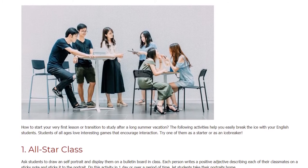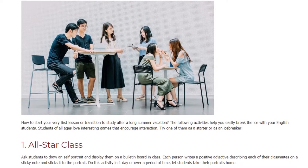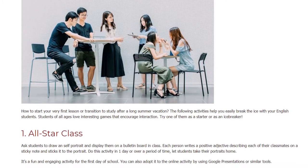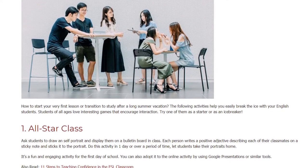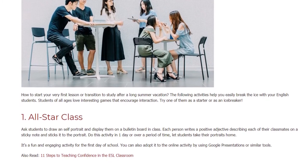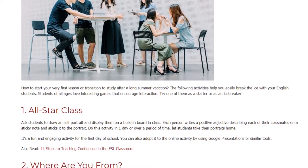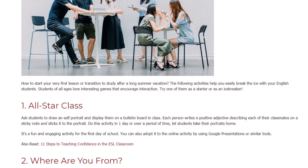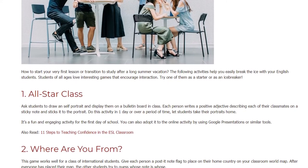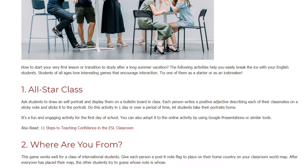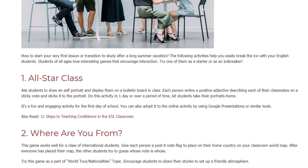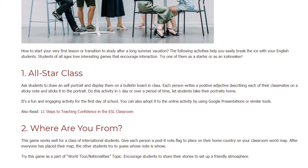Activity 1: All-Star Class. Ask students to draw a self-portrait and display them on a bulletin board in class. Each person writes a positive adjective describing each of their classmates on a sticky note and sticks it to the portrait. Do this activity in one day or over a period of time. Let students take their portraits home. It's a fun and engaging activity for the first day of school. You can also adapt it to an online activity by using Google Presentations or similar tools.